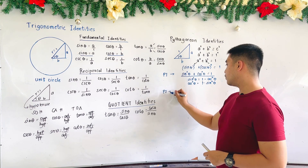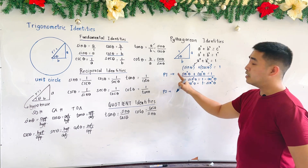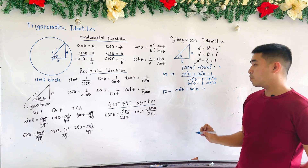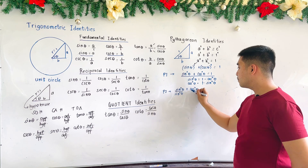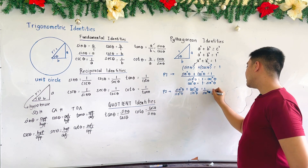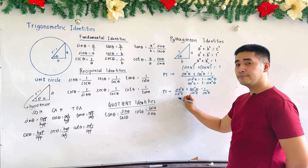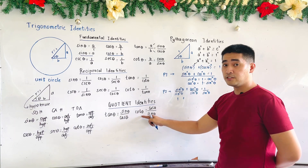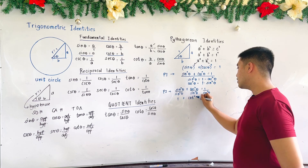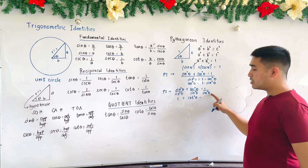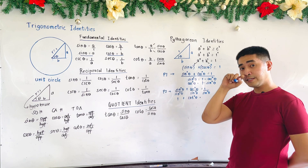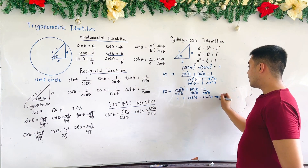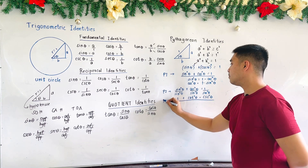For the second Pythagorean identity, start with sin²θ + cos²θ = 1 and divide all terms by sin²θ. Sin²θ over sin²θ equals 1. Cosine squared over sine squared — since cosine over sine is the quotient identity for cotangent — becomes cot²θ. And 1 over sin²θ, since 1 over sine is cosecant, becomes csc²θ. Therefore, 1 + cot²θ = csc²θ. This is the second Pythagorean identity.